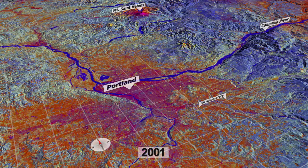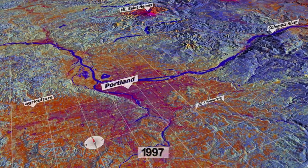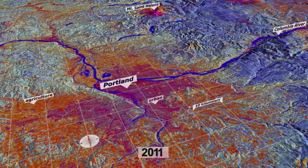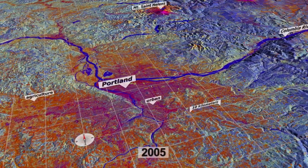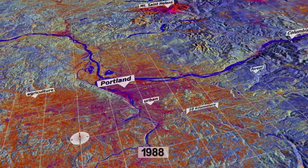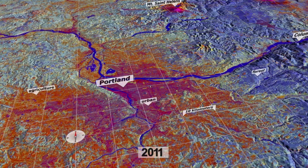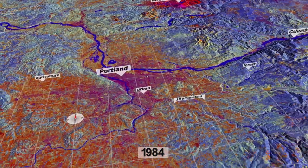When we're looking at how processes affect landscapes, you need to understand how the processes unfold over time. Hindsight's 20-20. Landsat gives you that hindsight.